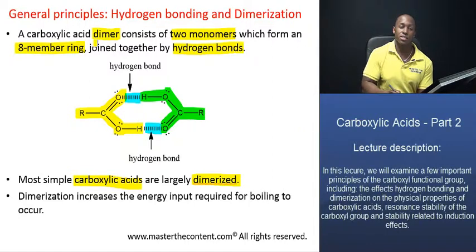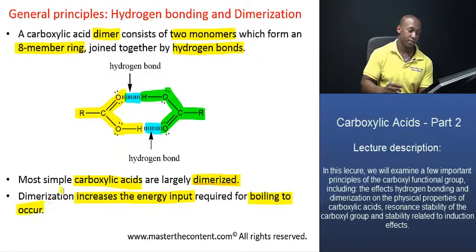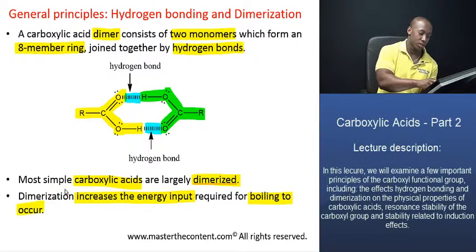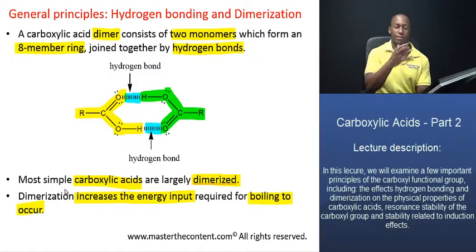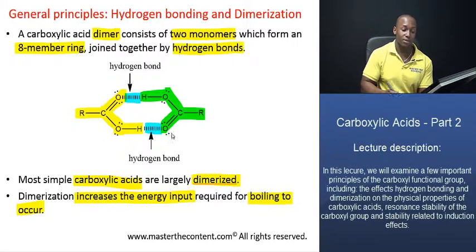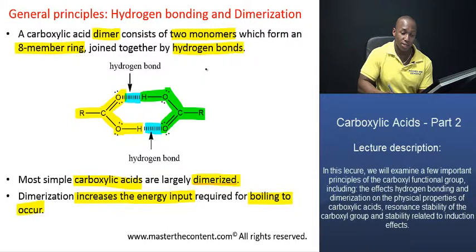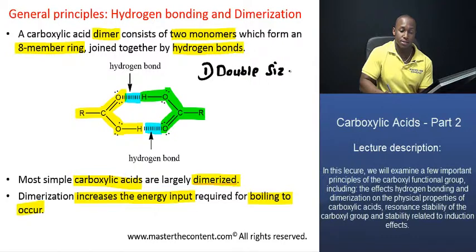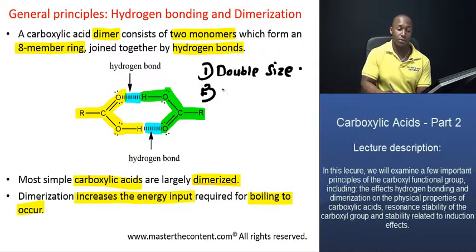So what does dimerization do as far as the physical properties of acids are concerned? It actually increases the energy input that is required for boiling to occur, for vaporization to occur. And how does it do that? It's very simple. When you form a dimer, you do two things: one, you effectively double the size of the molecule, and two, you introduce additional hydrogen bonds.